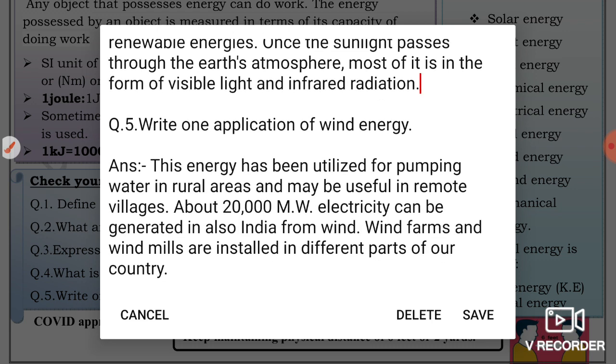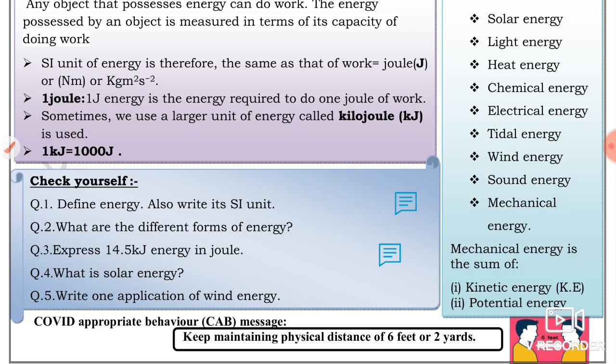Fifth question: Write one application of wind energy. Wind energy has been utilized for pumping water in rural areas and may be useful in remote villages. About 20,000 megawatts of electricity can be generated in India from wind. Wind farms and windmills are installed in different parts of our country. Windmills are used to harness wind energy.